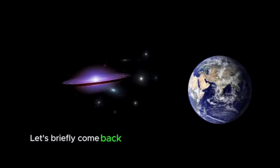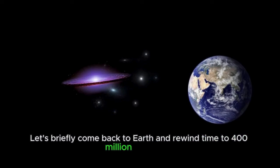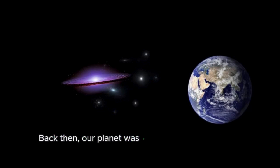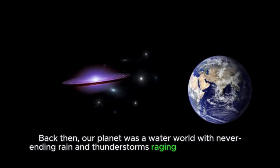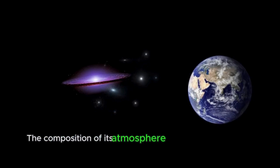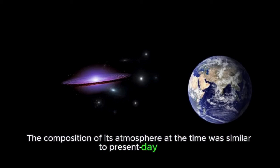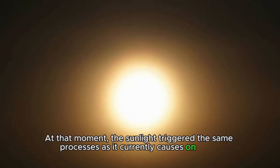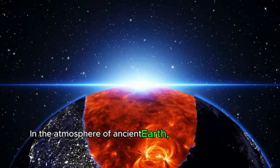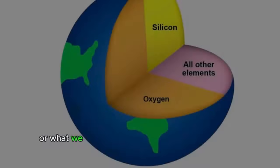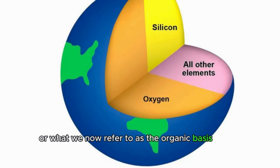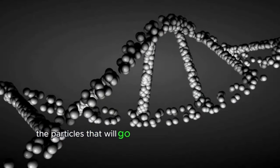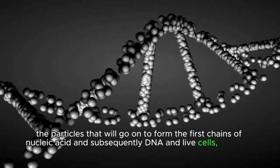Let's briefly come back to Earth and rewind time to 400 million years ago. Back then, our planet was a water world with never-ending rain and thunderstorms raging above the surface. The composition of its atmosphere at the time was similar to present day Pluto. At that moment, the sunlight triggered the same processes as it currently causes on Pluto. In the atmosphere of ancient Earth, breaking down from gas molecules and forming into new, more complex elements, or what we now refer to as the organic basis of life: nucleobases. The particles that will go on to form the first chains of nucleic acid, and subsequently DNA and live cells, the basis of life.